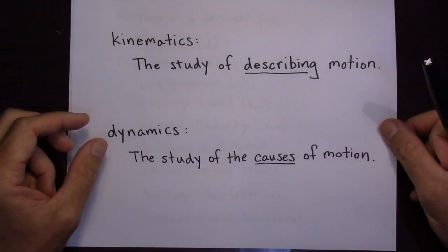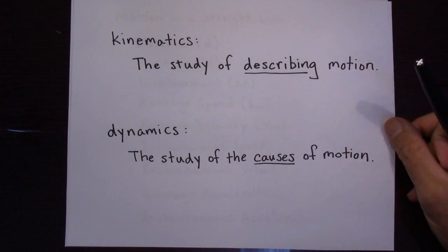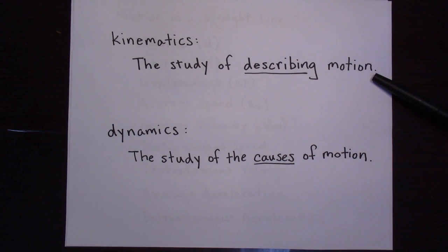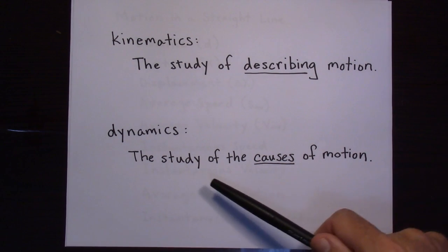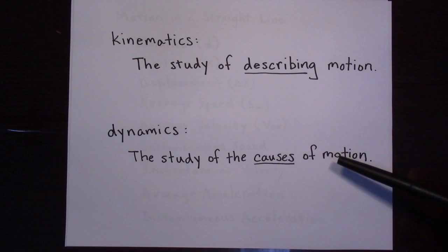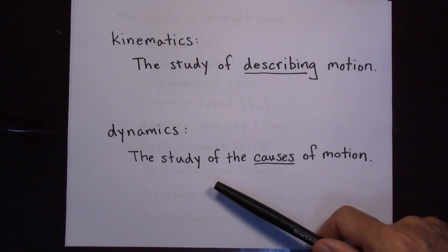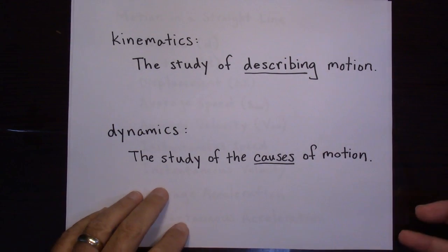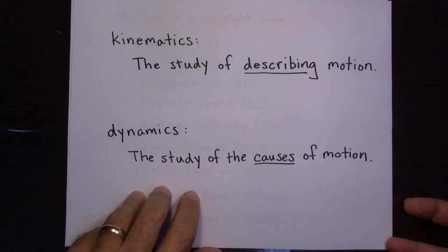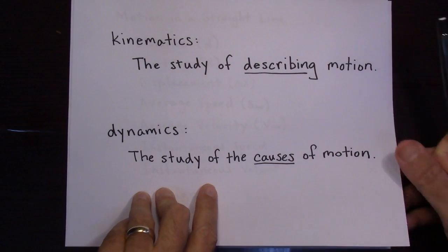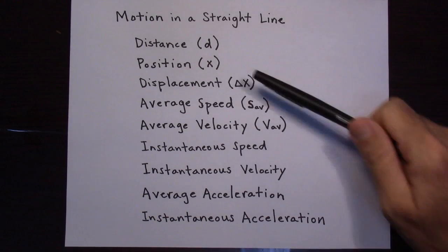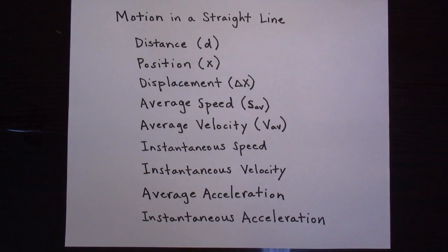Let's clarify that kinematics — you usually study kinematics before you study dynamics. Kinematics is the study of describing an object's motion, whereas dynamics is the study of the causes of an object's motion. Dynamics would be like Newton's laws, while kinematics is what you're studying if you're just talking about accelerations, positions, and velocities of an object.